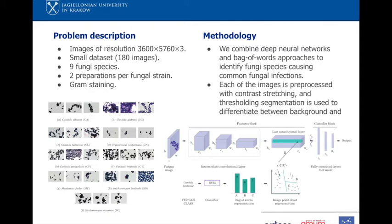To address the problem with the small dataset and high image resolution, we preprocess each of the images with contrast stretching and segment out the background from the fungi using the Otsu threshold. Then we divide the images into patches of 500 pixels downscaled by factor two. We build a Gaussian mixture model with features obtained from convolutional parts of a deep network pre-trained on ImageNet. Then we use the Fisher vector to create a patch representation and classify it using support vector machine or random forests. The full pipeline is represented below on the right.